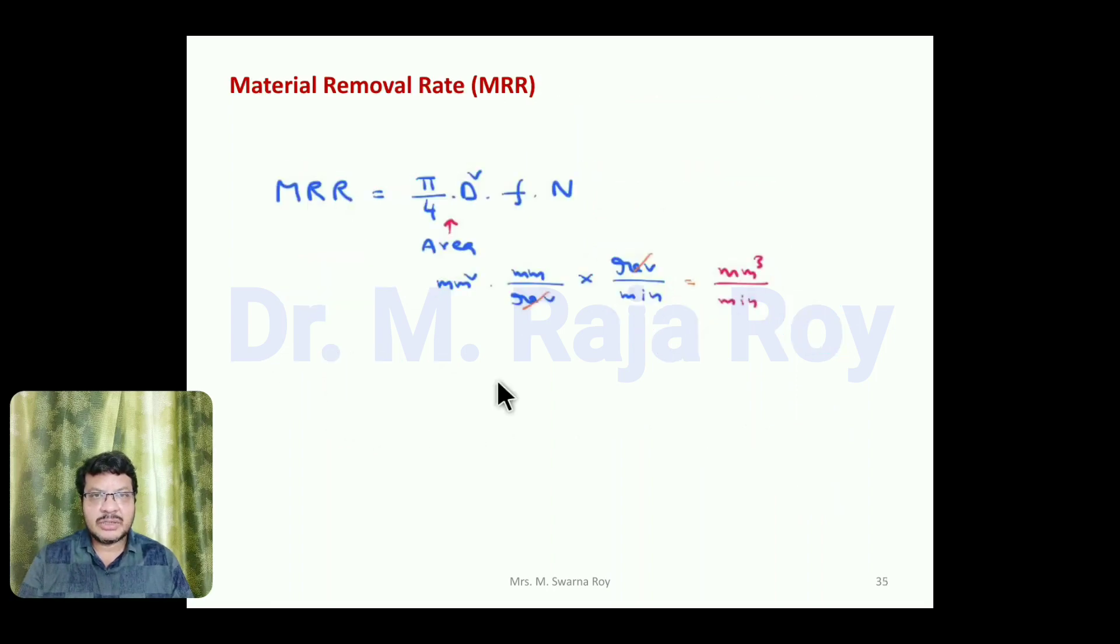During the drilling process, how much material the tool is removing we have to calculate. That is called material removal rate. The equation is π/4 D² F times N, where F is the feed in mm per revolution, N is the speed in revolutions per minute. If you substitute all these units, finally you get the unit for material removal rate as mm³ per minute.